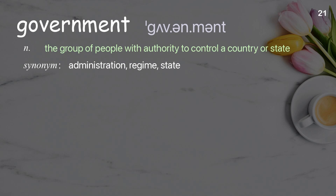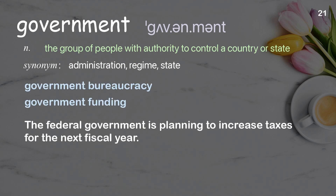Government: the group of people with authority to control a country or state. Examples: government bureaucracy, government funding. The federal government is planning to increase taxes for the next fiscal year.